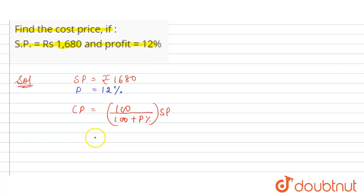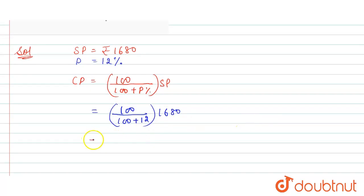So 100 divided by 100, profit is 12 percent, into SP which is 1680. Now solve this: 100 divided by 100 plus 12 is 112, into 1680. So cancel out the terms.